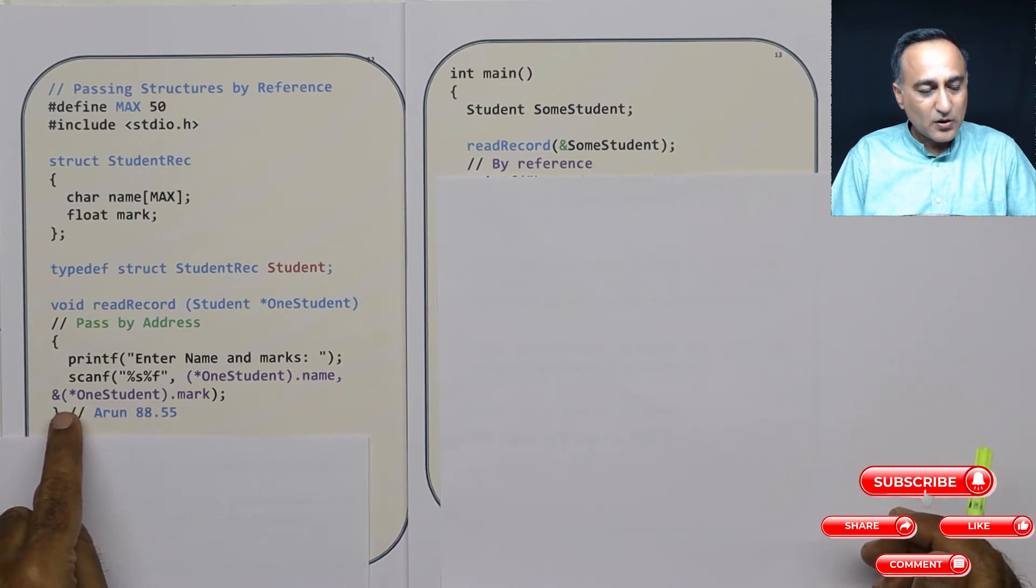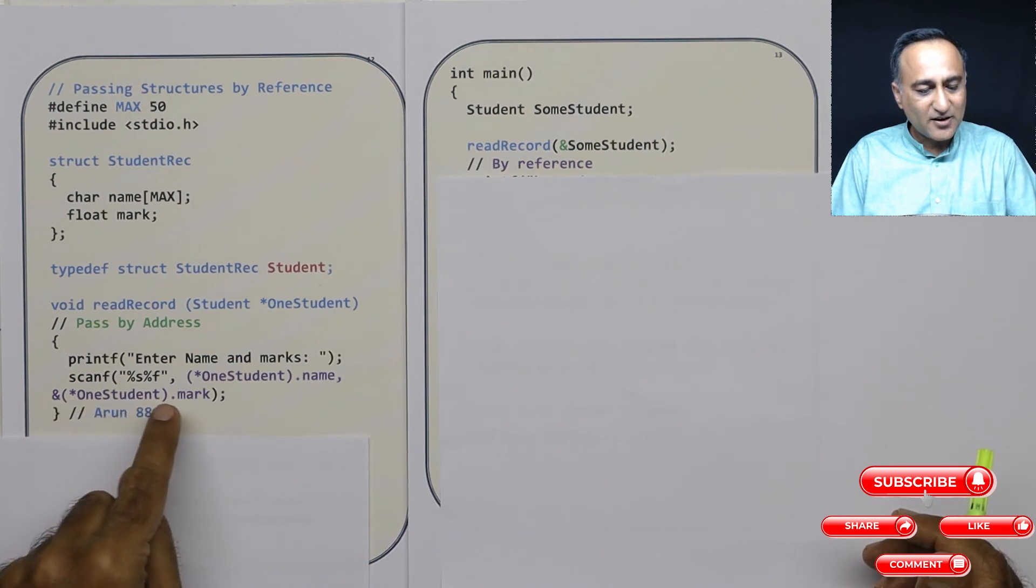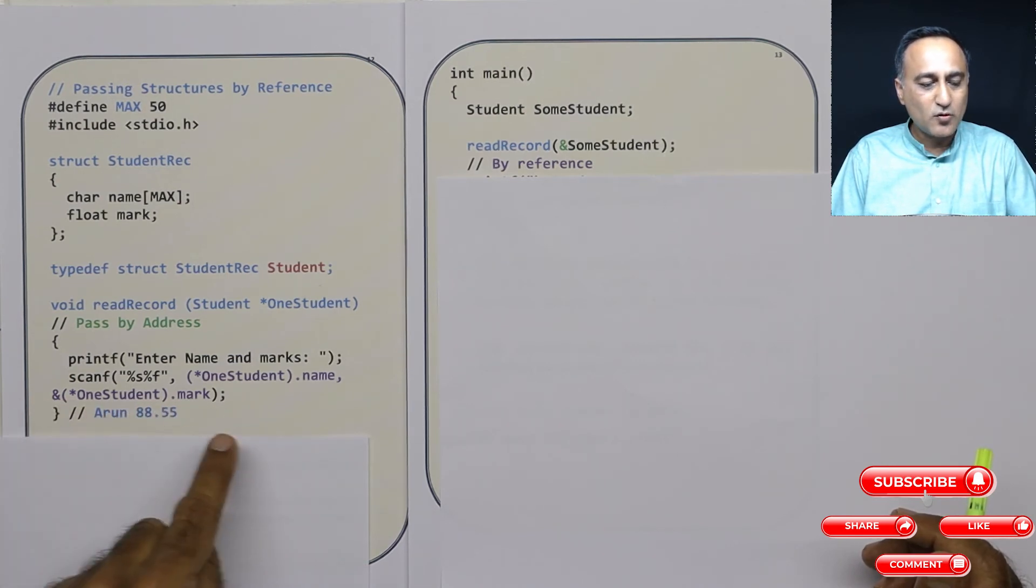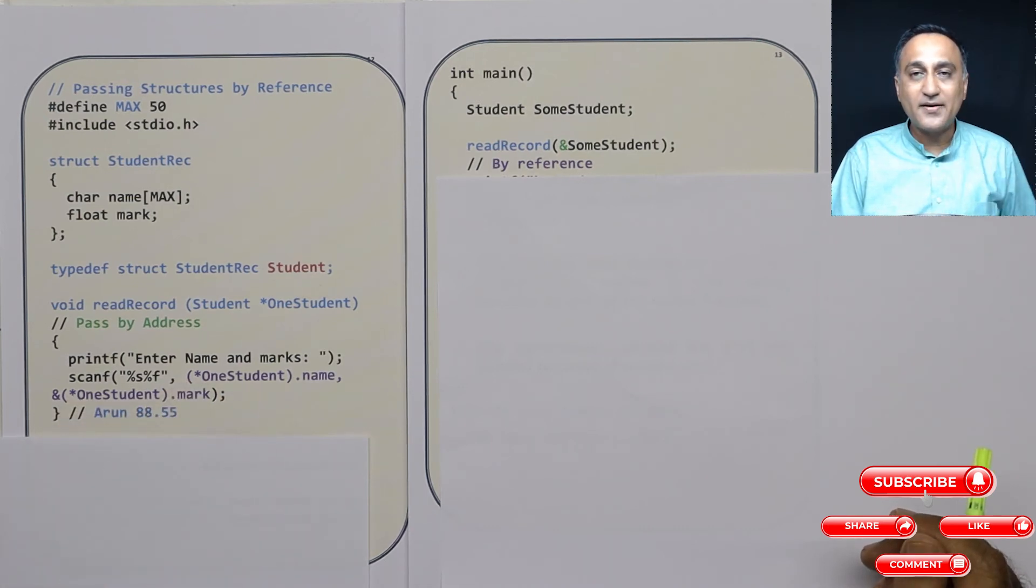Similarly, here it is one student first, then address of that dot mark. So that is the way you have to look at it. If you fail to put this parenthesis, you're going to get garbage printed or you will get a segmentation fault when you're trying to run it. So just be aware of what we're trying to do here.